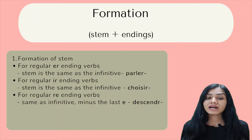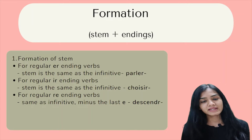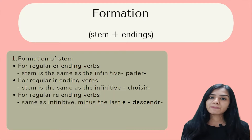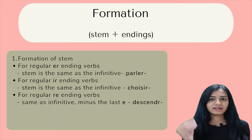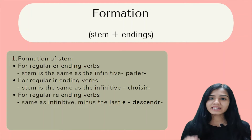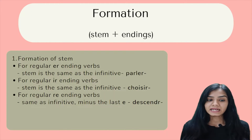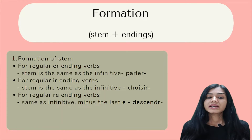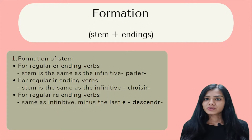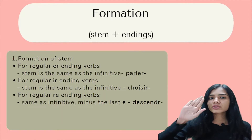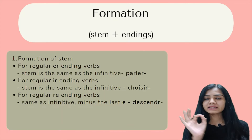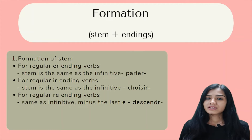For regular IR-ending verbs, the stem is also the same as the infinitive — for example, 'choisir' with the full IR ending. For regular RE-ending verbs, the stem is the infinitive minus the final E. So if the verb ends in RE, we eliminate the E and keep the rest.